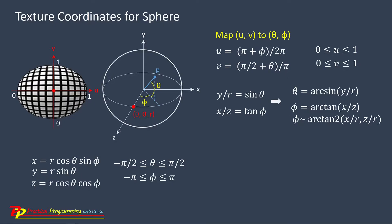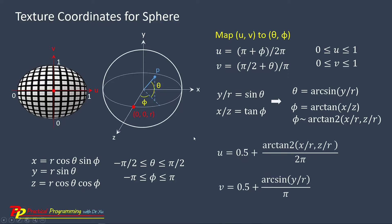Now we substitute theta and phi into the equations to get the final texture coordinates. U equal to 0.5 plus arc tangent 2 of X and Z divided by 2 pi, and V equal to 0.5 plus arc sine of Y over R divided by pi. So here are our texture coordinates for our sphere.